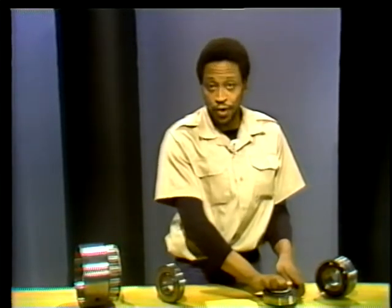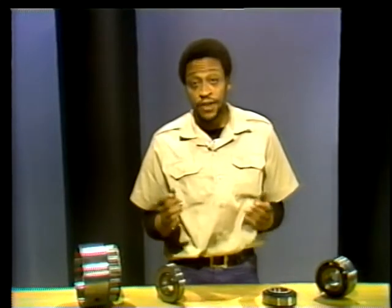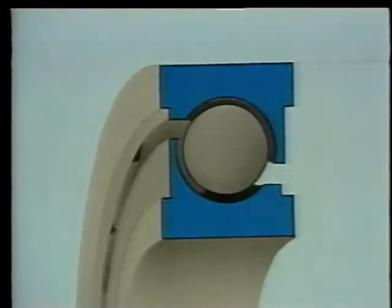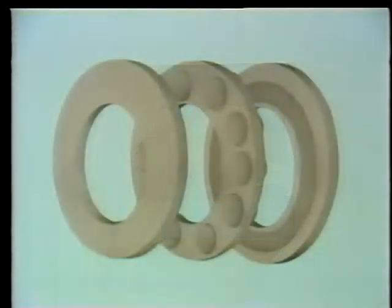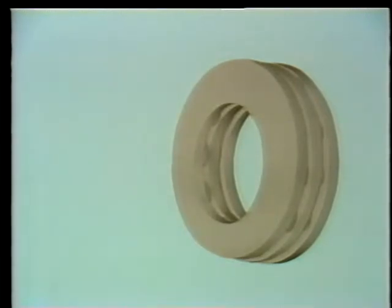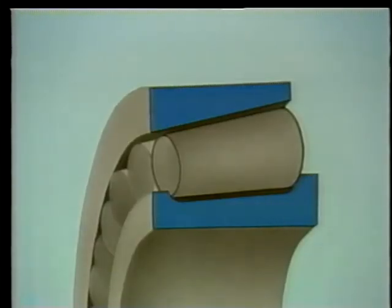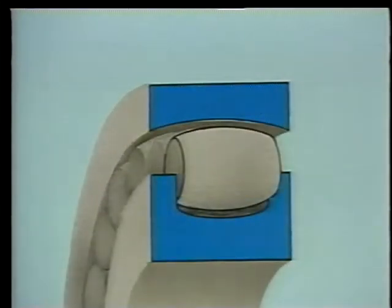Let's review what we've covered. We talked about different types of ball bearings: shallow groove, deep groove or Conrad, spherical race, angular contact, and thrust bearings. Then we looked at several types of roller bearings: cylindrical, tapered, barrel or spherical, needle, and thrust bearings. We also mentioned two variations — multiple row and separable bearings.